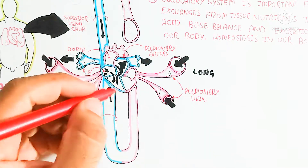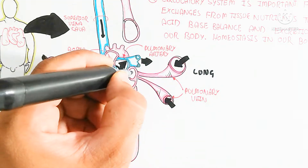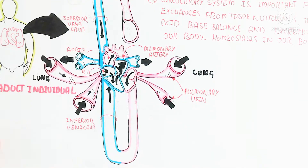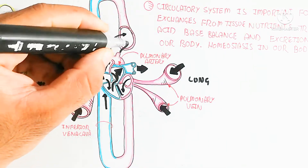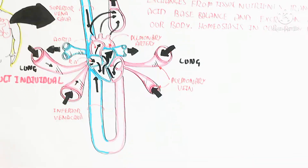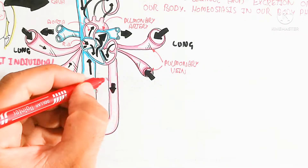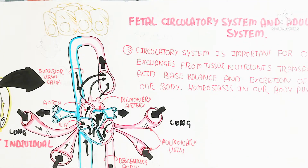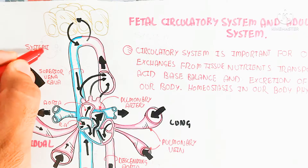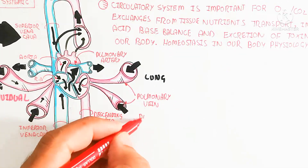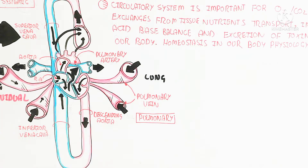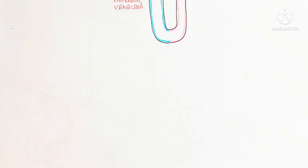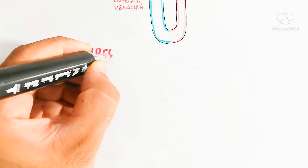The pulmonary vein collects oxygenated blood from the lungs toward the heart, through the left atrium to the left ventricle, then through the aortic valve toward the aortic arch and descending aorta for systemic circulation throughout the body — the peripheral circulation. This represents the tissue exchange of gases and other substances. Now let's begin to understand the fetal circulatory system, which is very complex compared to the adult.